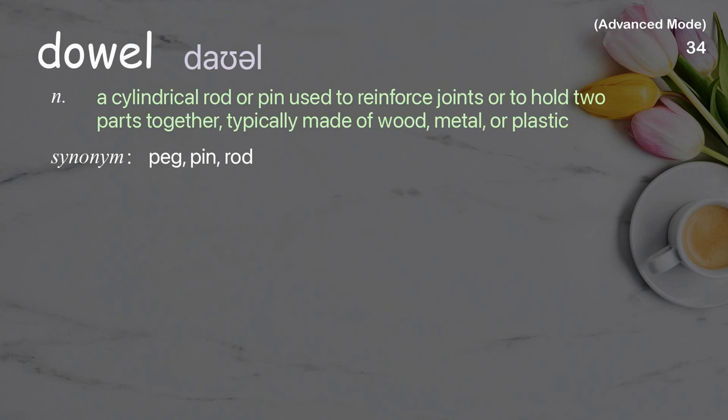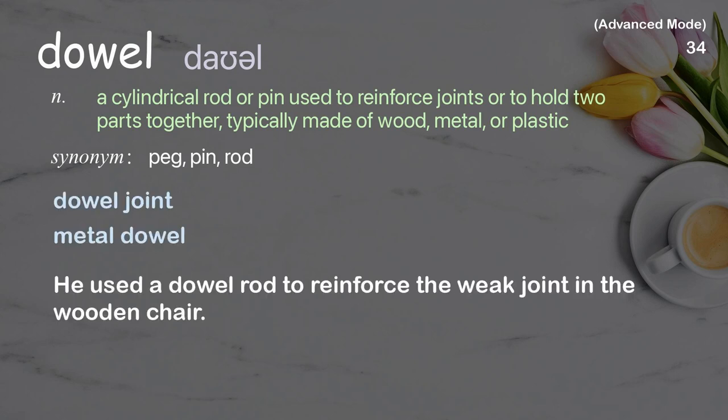Dowel. A cylindrical rod or pin used to reinforce joints or to hold two parts together, typically made of wood, metal, or plastic. Examples: dowel joint, metal dowel. He used a dowel rod to reinforce the weak joint in the wooden chair.